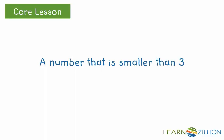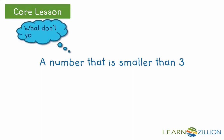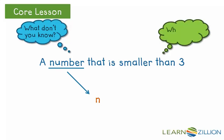Here we're given the situation: a number that is smaller than 3. If we would like to represent this situation mathematically, there are a few questions we need to ask. The first is: what don't we know? We don't know what our number is. Since we don't know what the number is, we can represent it as a variable — I will use n to stand for a number. What do we know? We know there is an unknown number and it's smaller than 3.